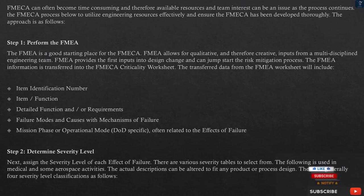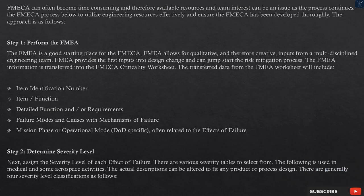The transferred data from the FMEA worksheet will include: item identification number, item/function, detailed function and/or requirements, failure modes and causes with mechanisms of failure, mission phase or operational mode-specific information — often related to the effects of failure.